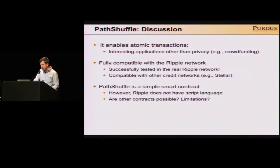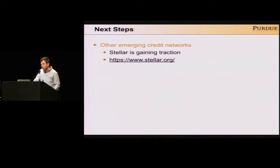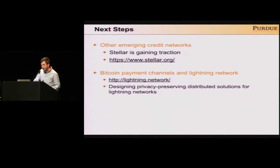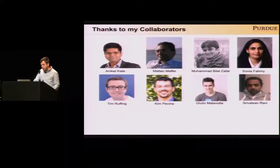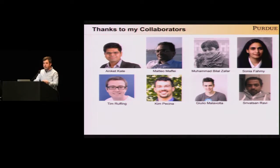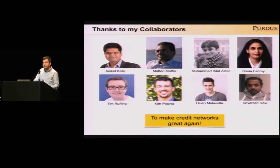We are interested in whether other smart contracts are possible even without a scripting language in Ripple, or whether there are inherent limitations. In the future, we are also looking to apply our privacy techniques to other emerging credit networks like Stellar and other distributed scenarios like the Lightning Network, where pairs of users share a link if they have a Bitcoin payment channel between them. If you're interested in these topics, I'm open for collaborations — please come talk to us. I'd like to thank my collaborators for helping in all this work, and I'd like to thank them for making credit networks great again.